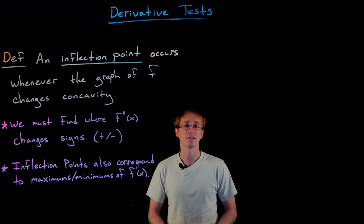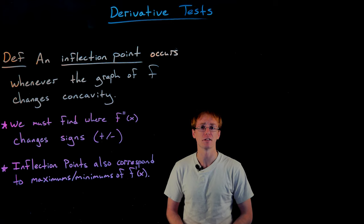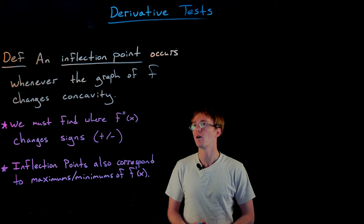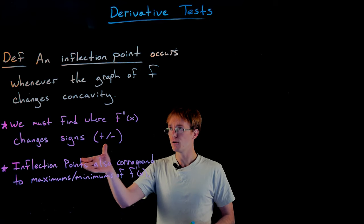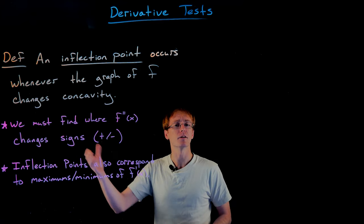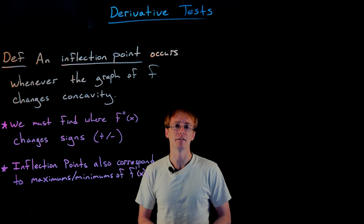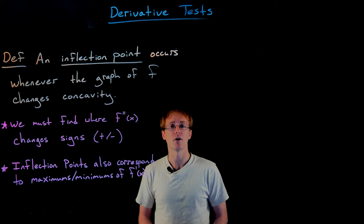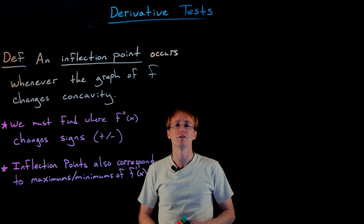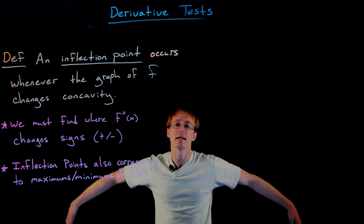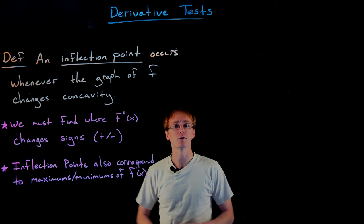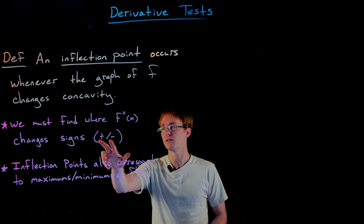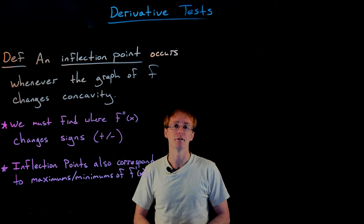We discussed how the concavity of our function f is described using the second derivative. So if we're looking for where the function changes concavity, that's equivalent to looking where that second derivative changes signs. Remember: when the second derivative is positive we are concave up, and when the second derivative is negative we are concave down. So the inflection point is where our second derivative is changing from positive to negative.